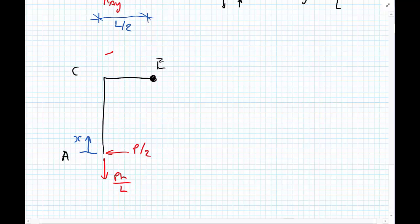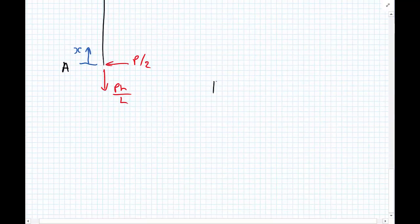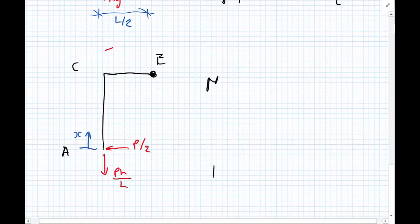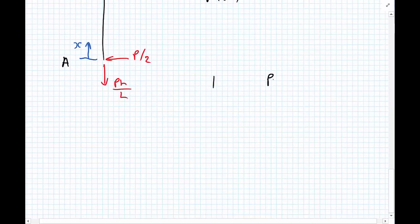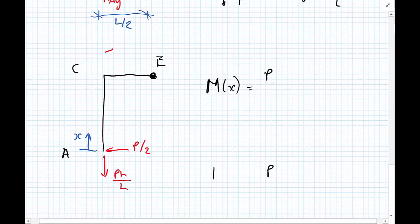So P H upon L is going straight through the column, but P upon 2 is at 90 degrees to the column. So we can say that the bending moment function, M of X, would be equal to P upon 2 multiplied by X.